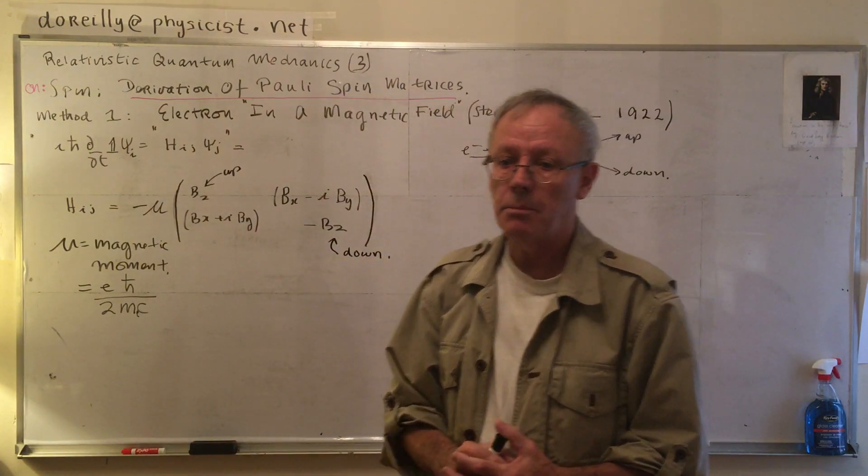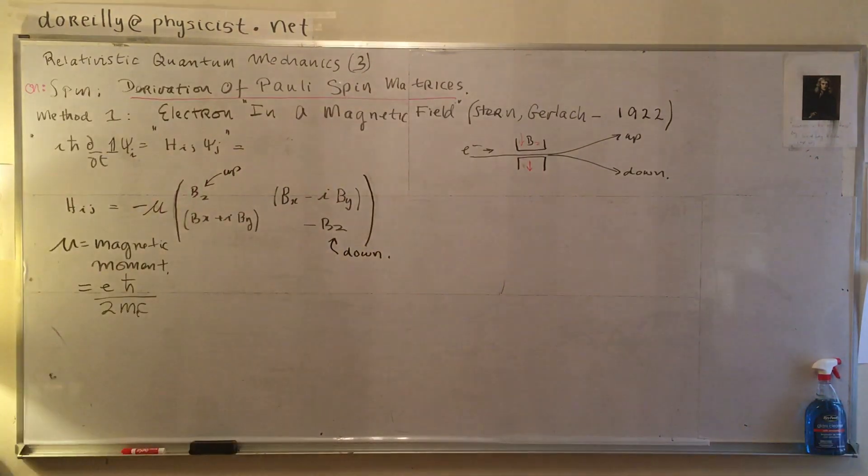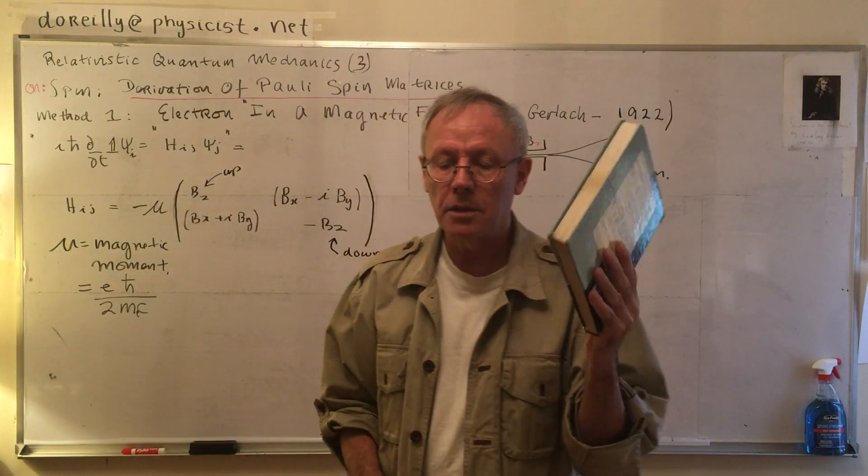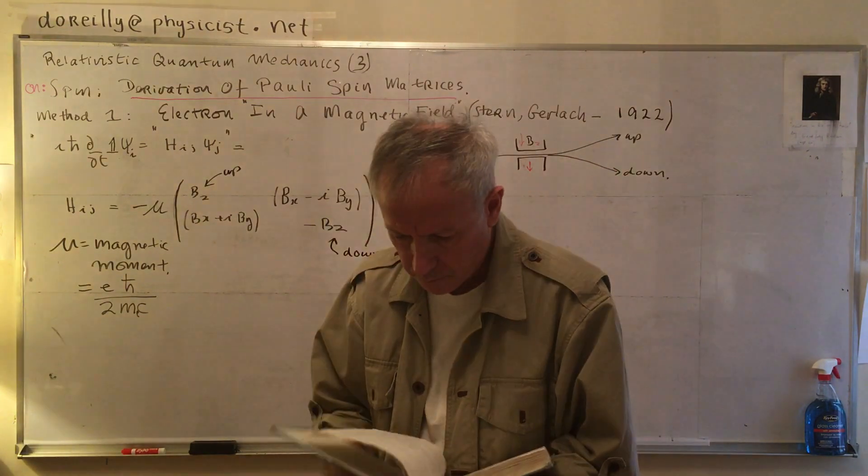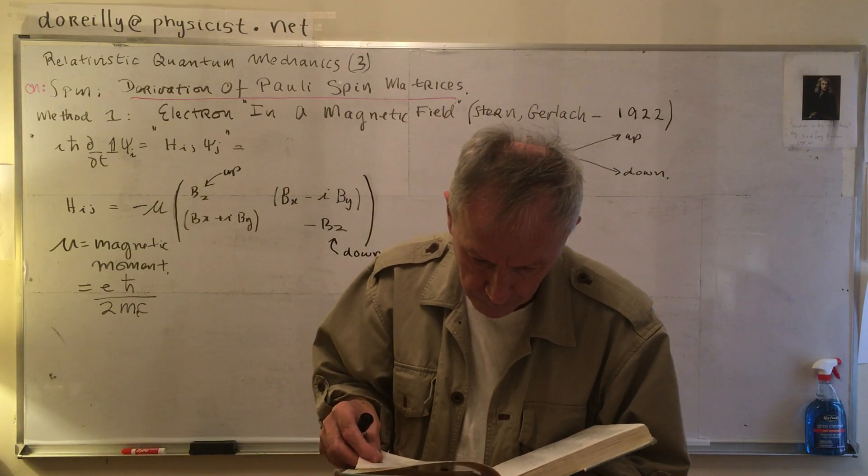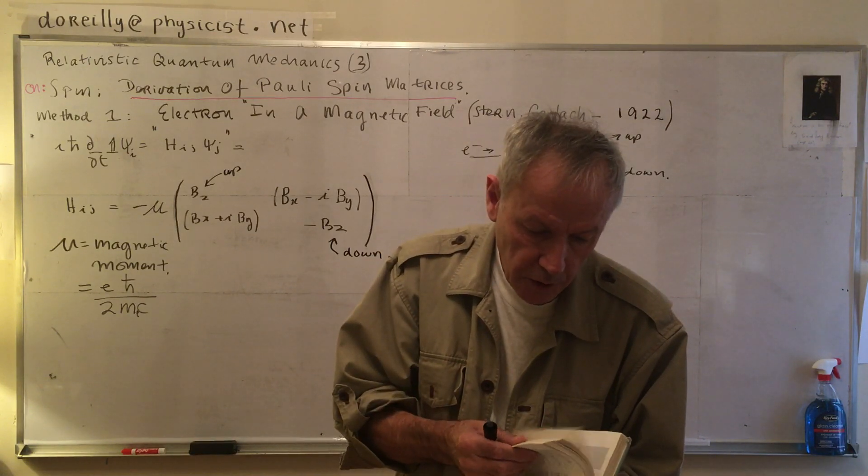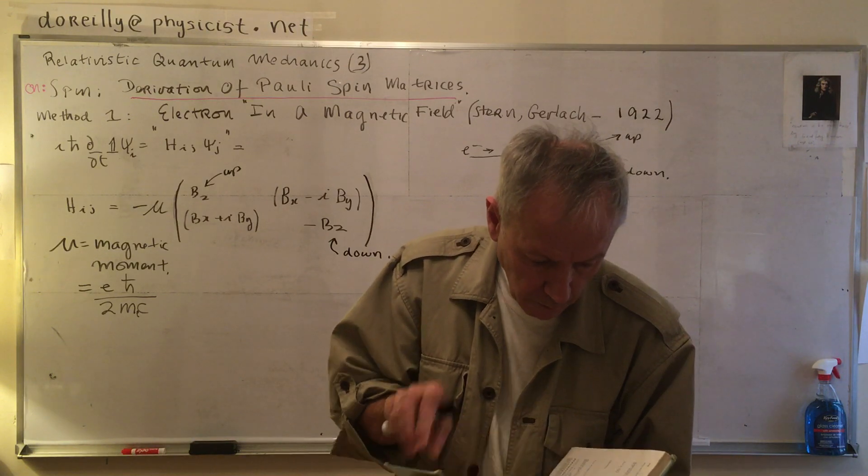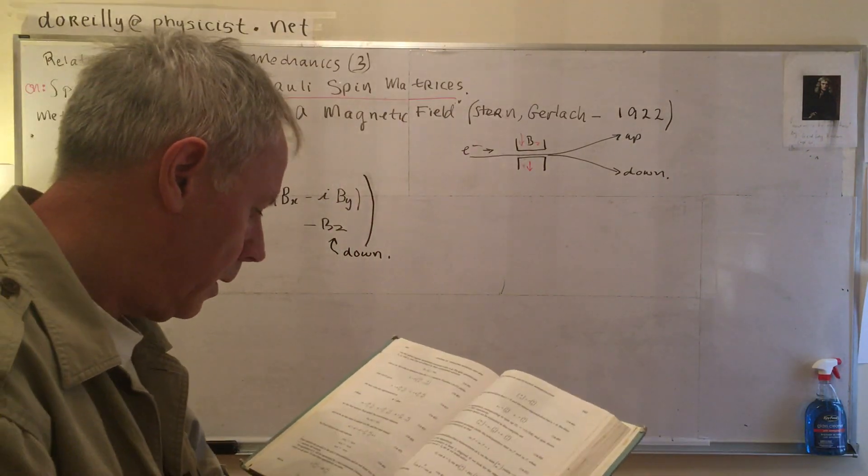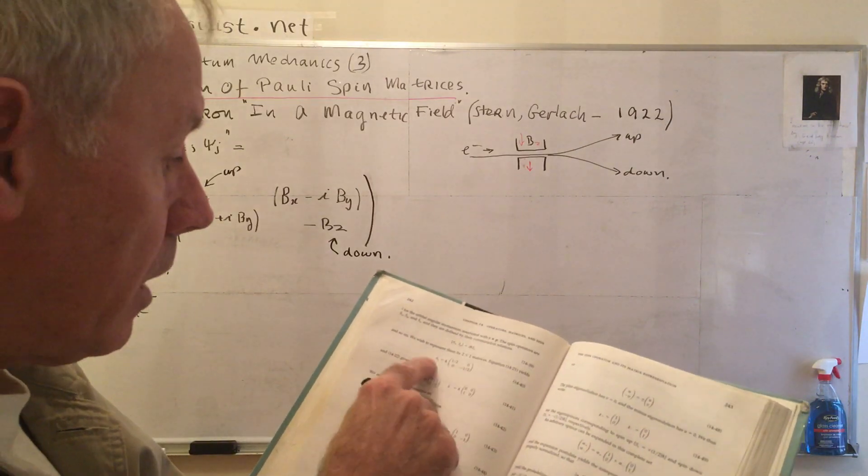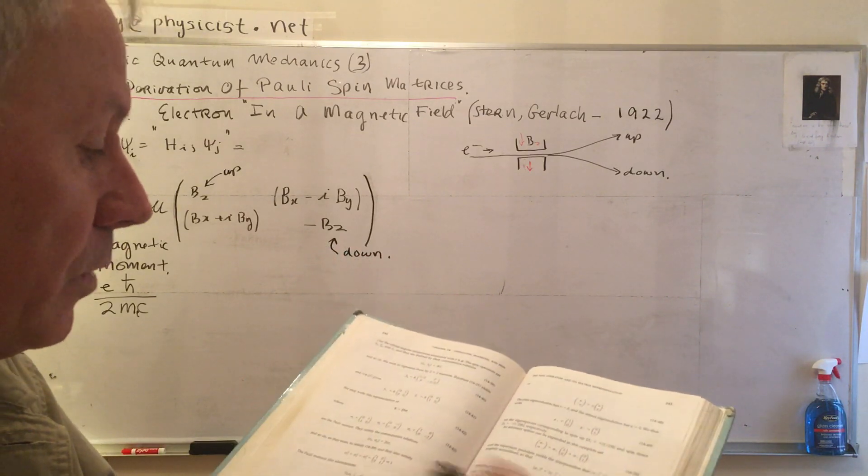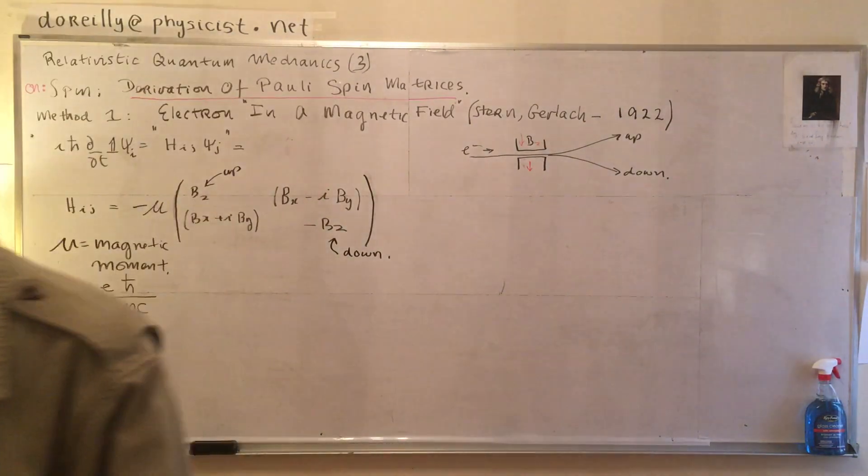Today I want to derive the Pauli spin matrices. I have a bunch of quantum mechanics books, even my favorite, Gassi Yarlovich, and ten others over there. Not one of them ever derives the Pauli spin matrices. Let's just get them. All you ever get is this definition where these matrices are the Pauli spin matrices. They satisfy these commutation relations. Then they go through that algebra but they never show you where they come from, how to derive them. All the others are the same.